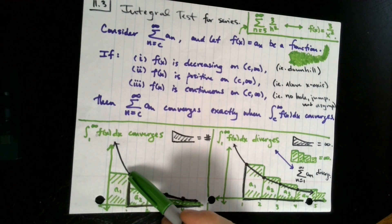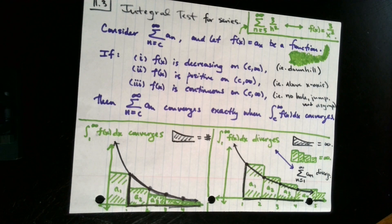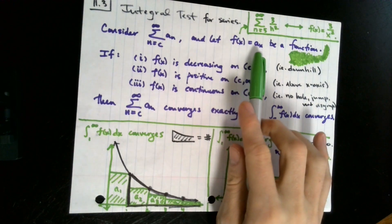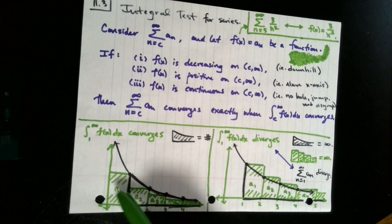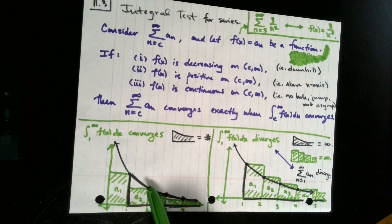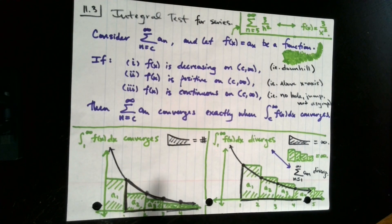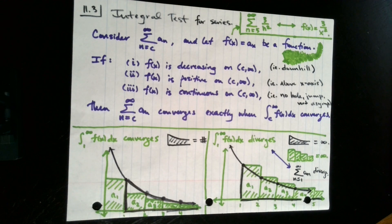Similar to before, the function at f of 1 is just a sub 1, since the function corresponds precisely to the terms of our series. Drawing the bar off to the left by one unit, the bar has area a_1. At f of 2, which equals a sub 2, the rectangle has area a sub 2, and we continue for a sub 3, a sub 4, and so on. Because this function is decreasing, when I draw my bar off to the left, the bar is necessarily going to be under the function.